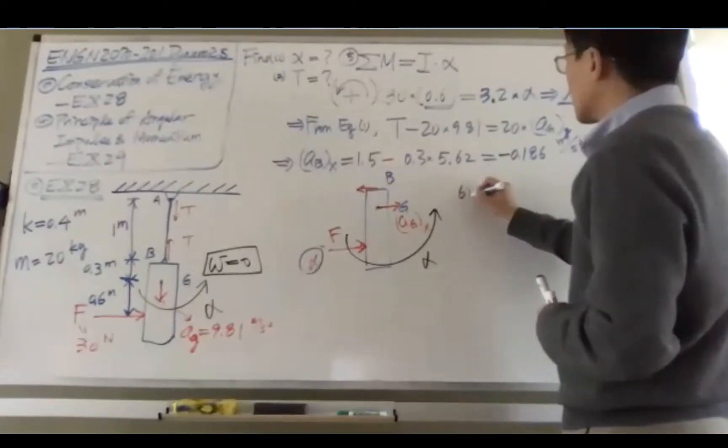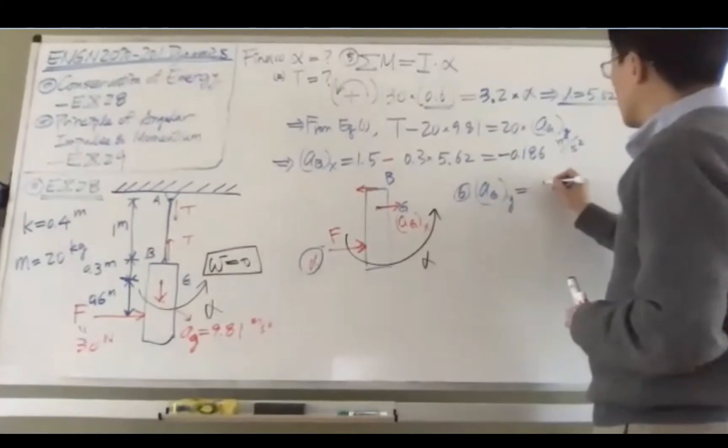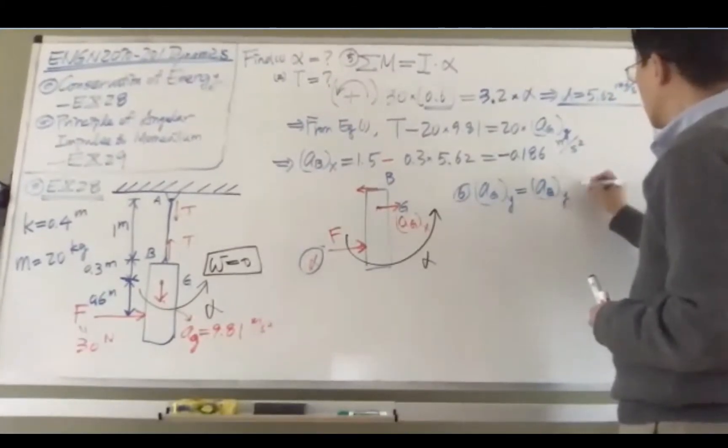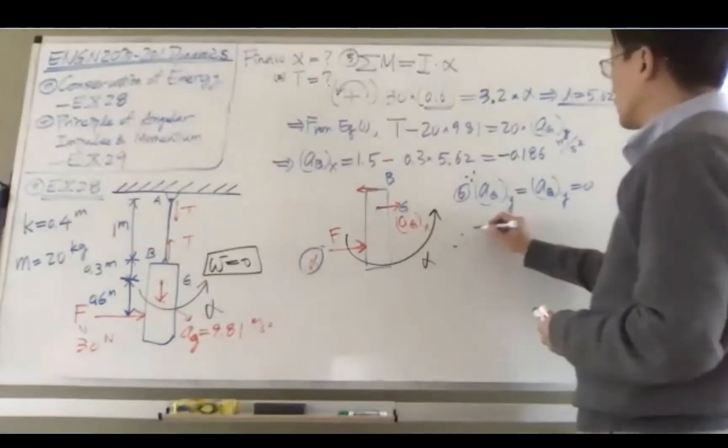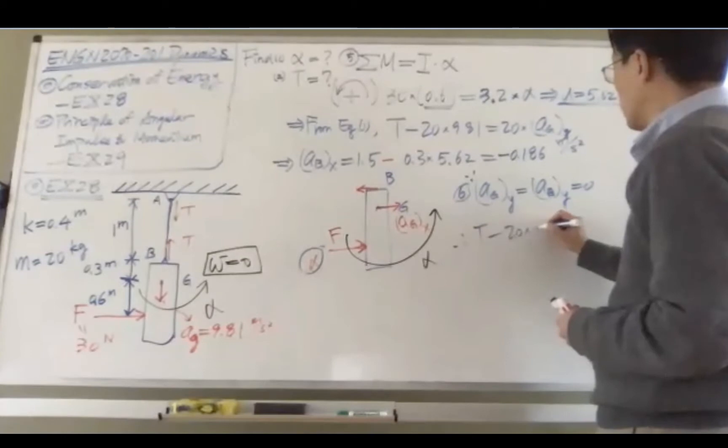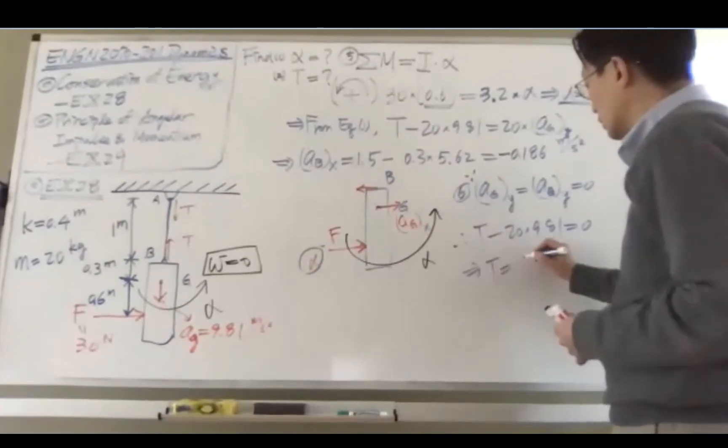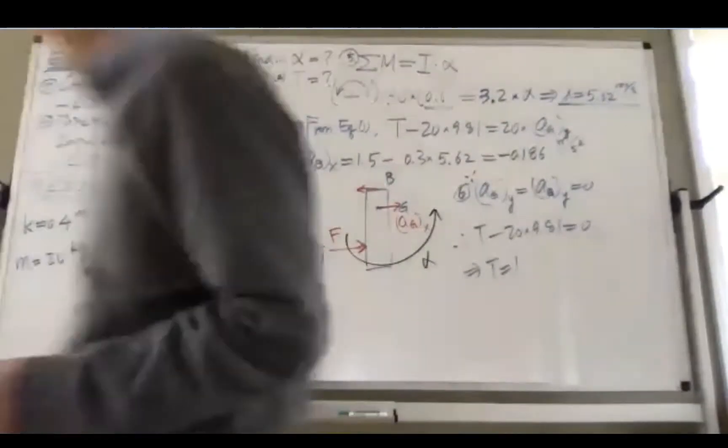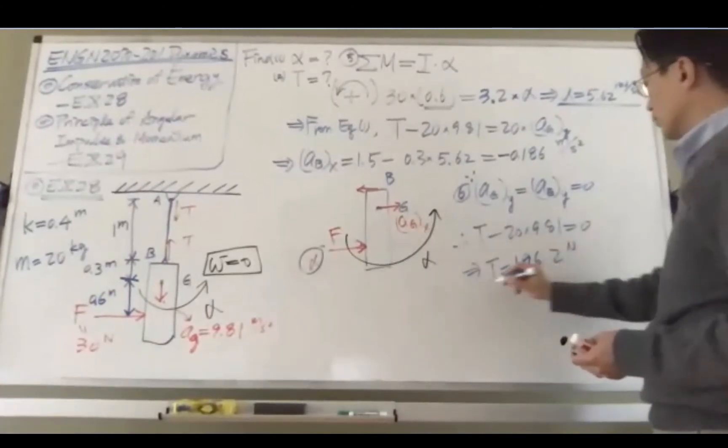And step six, Agy equals Agy, Aby to be zero, so T is just the weight itself. That means the tension is just 196.2 newtons.